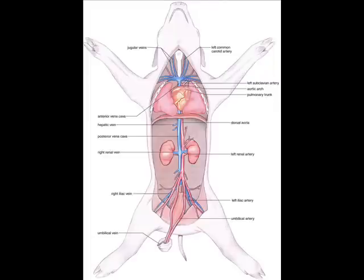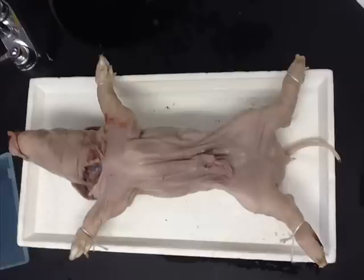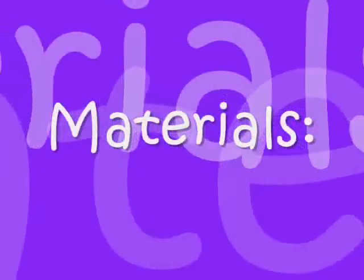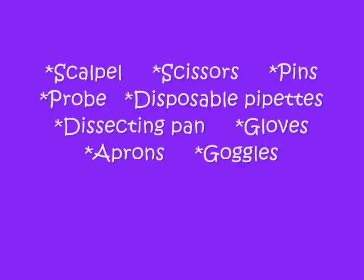The purpose of this lab is to compare the anatomy and physiology of a pig to a human and determine their similar characteristics. We hypothesize that if a pig is a mammal, then it will have similar physiology and anatomy to a human. For our sample we will use a fetal female pig.